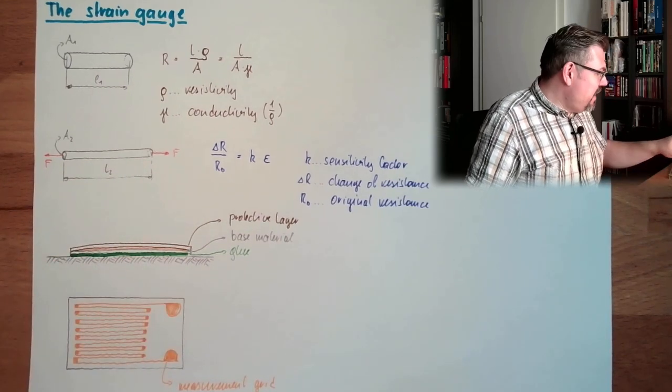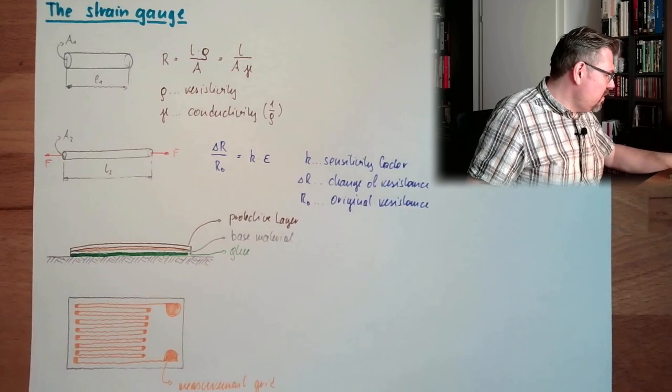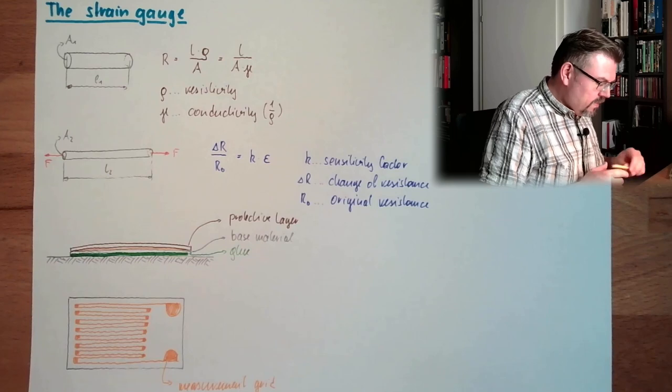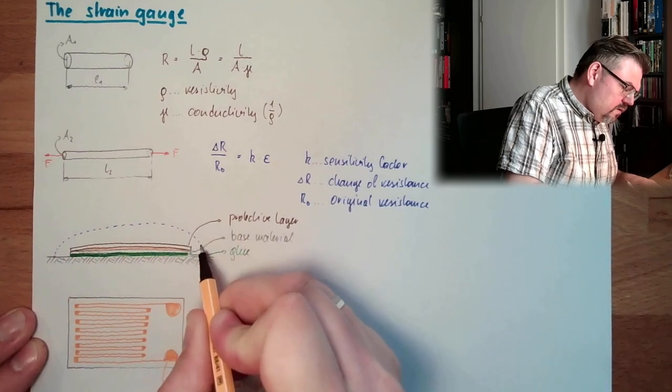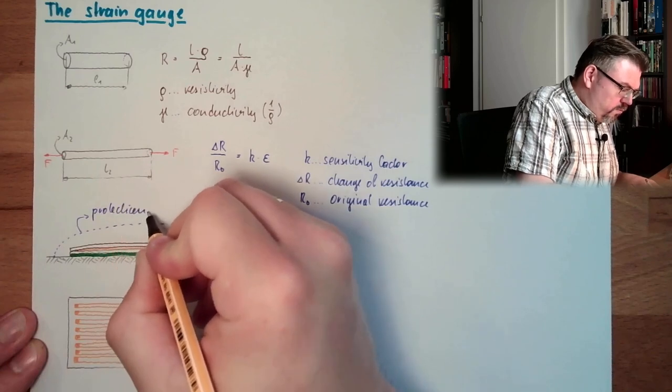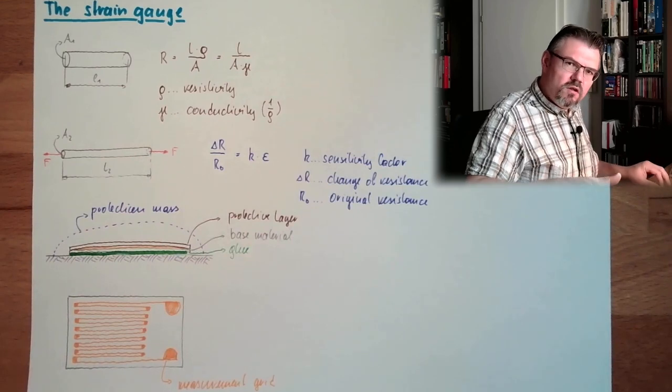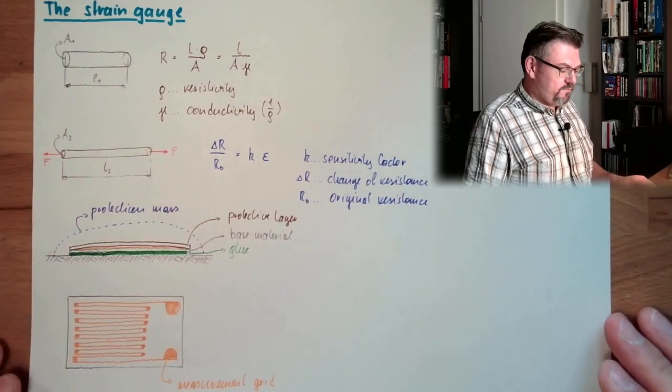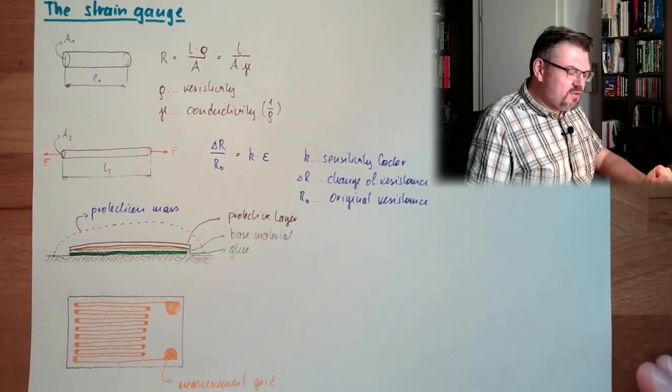And then we want to protect this. And there is also some protective material around it. Looking like that. So usually we have the protection mass. Some mass which is simply smeared on there. It's not conductive or anything. Just to protect it physically. This is a strain gauge. This is how a strain gauge looks like.